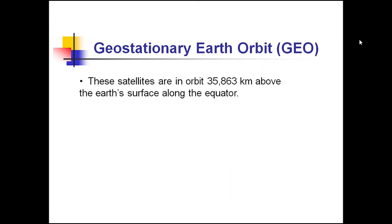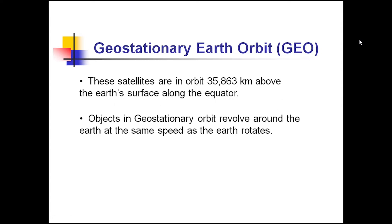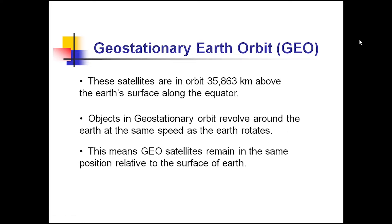Geostationary Earth orbit, also known as GEO orbit. In GEO orbit, satellites are at a height of 35,863 km above the surface of the Earth. Objects in geostationary orbit revolve around the Earth synchronously, that means at the same speed as the Earth rotates. Geostationary satellites remain in the same position relative to the surface of the Earth.